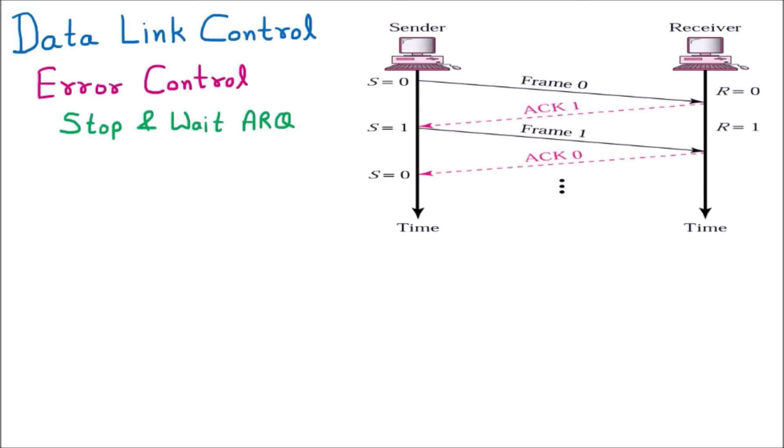We are discussing Stop and Wait ARQ. ARQ is Automatic Repeat Request. Automatic repeat request finds out errors and regenerates packets in the communication, which is part of error control. Stop and Wait ARQ is the part of error control where errors are found out, and if a packet is lost or corrupted, retransmission happens.